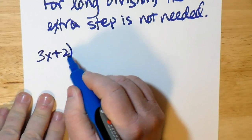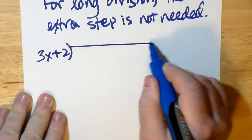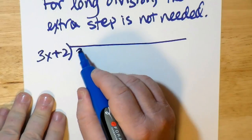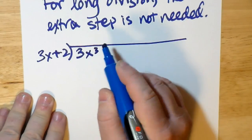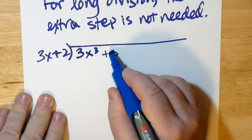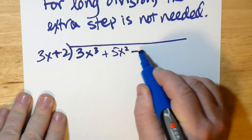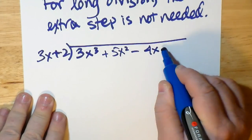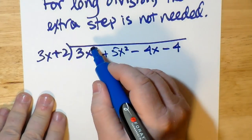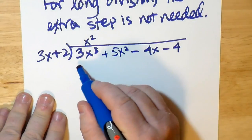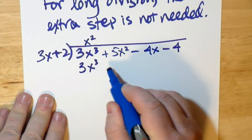So we have 3x plus 2 divided into 3x³ plus 5x² minus 4x plus 4. Doing that, we see that 3x goes x² times. We just build up our polynomial.